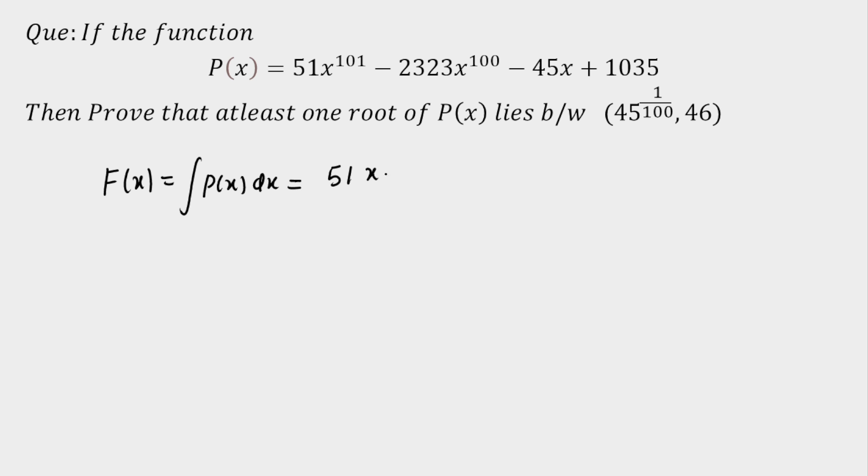So we will get 51x^102 divided by 102 minus 2323 times x^101 divided by 101 minus 45/2 x^2 and then 1035x. Now I think something will cancel out here: 51 and 102 will cancel out two times, and 2323 will cancel out with 101, that is 23 times, and rest of the term as it is.